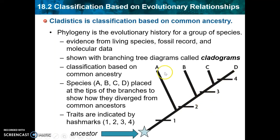We can see how A, B, C, and D are going to share some traits in common but also have some differences. That's the goal of cladistics, or creating a cladogram — to group these organisms based on the traits that they share.